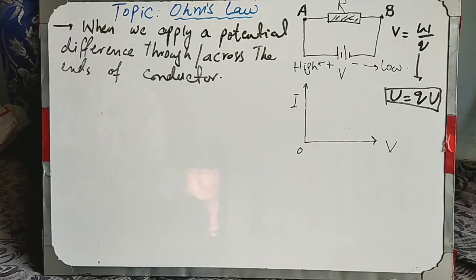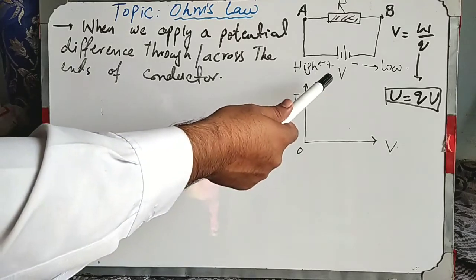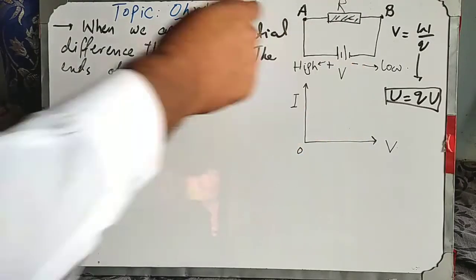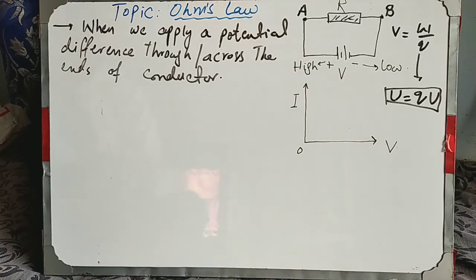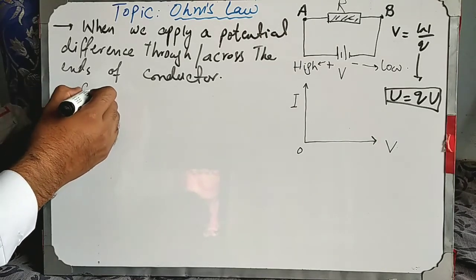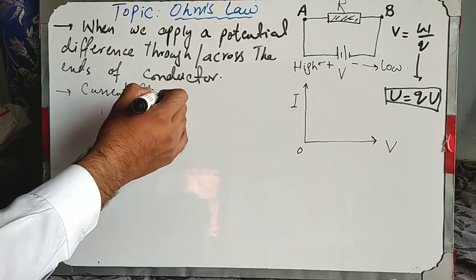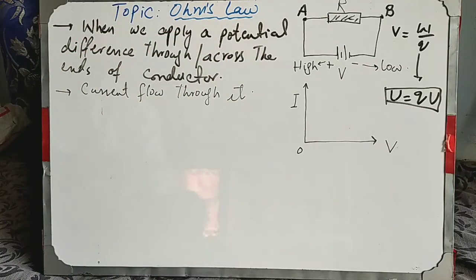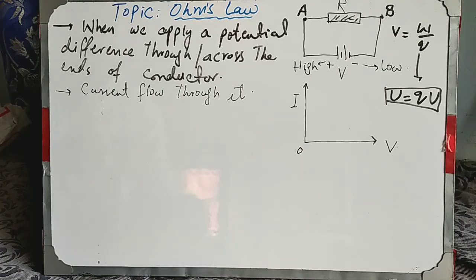So when we apply the potential difference across the ends of any conductor, there will be an energy difference between the points. According to the statement, whenever there is a potential difference applied across the conductor, current flows through it. According to Ohm's law, that current is directly proportional to the applied potential.